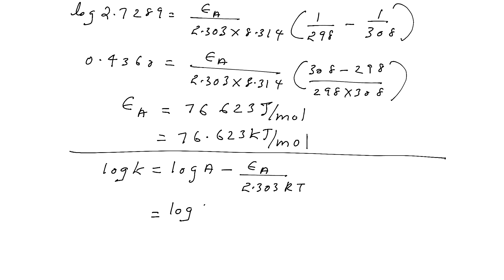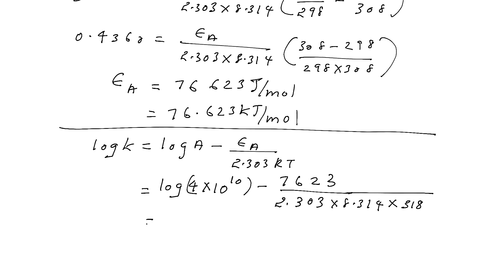Log A value is directly given in the question, 4 × 10^10. Minus Ea, we just now find Ea 76,623. 76,623 by 2.303 R, 8.314. And you are supposed to find the k value at which temperature? 318 Kelvin. So on simplifying you will be getting, see, finding log of this you will be getting 10.6021 minus, on calculating all these things, you will be getting 12.5843. So it is like on subtracting minus 1.9822.